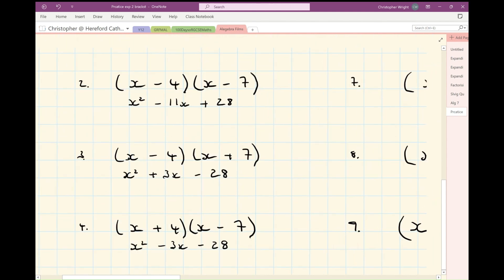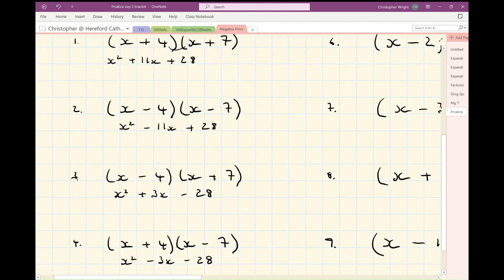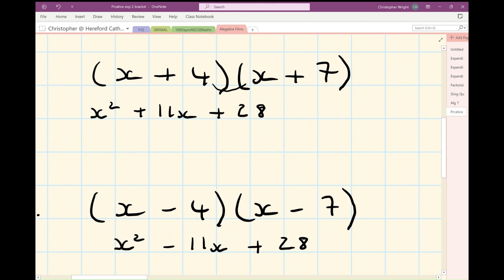Let's just have a quick look at one, two, three, and four. Okay, I'm sure you can spot with number one and number two, you've got plus 28 at the end, because it's plus four times plus seven in number one, and it's minus four times minus seven. And then you've got plus 11x's and minus 11x's.